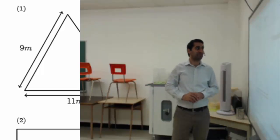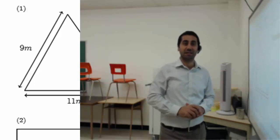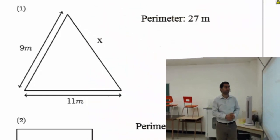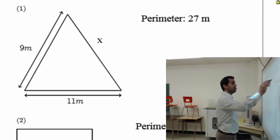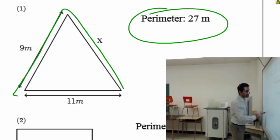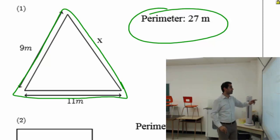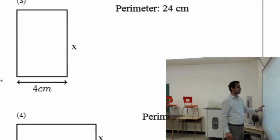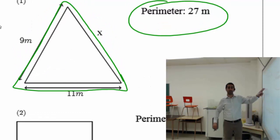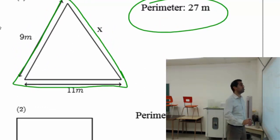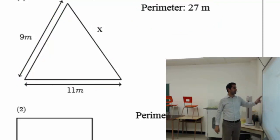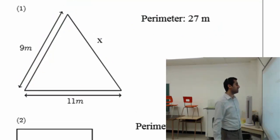In this video, you will learn how to find a missing side using given perimeter information. A quick reminder: the perimeter is the distance around a shape. This shape could be a triangle, square, a rectangle, or other figures like circles — though for circles, we say circumference instead of perimeter.